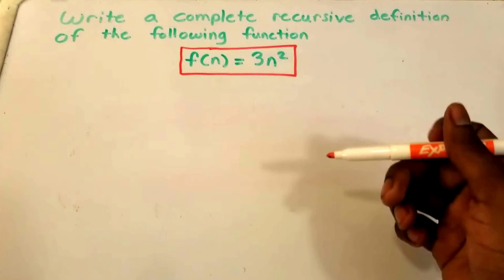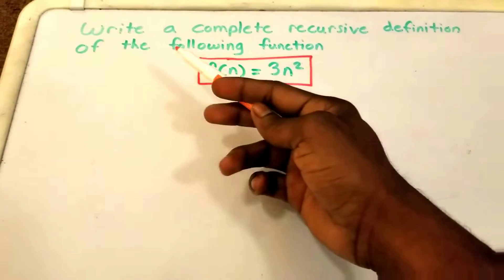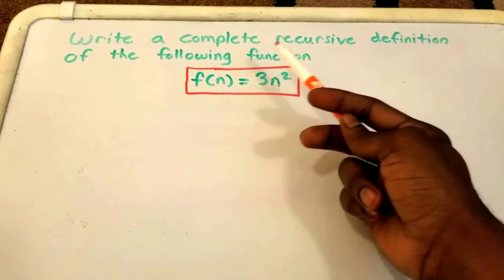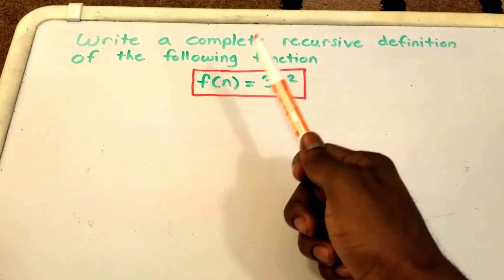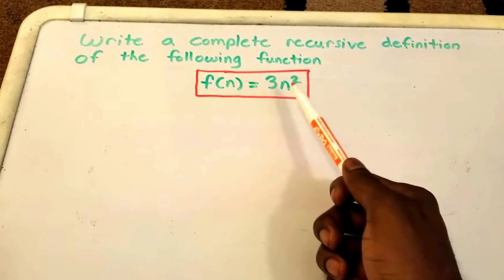Hey guys, welcome to this video on recursive definitions. Here we want to write a complete recursive definition of the following function. Here in my red rectangle we have our function: f(n) = 3n².